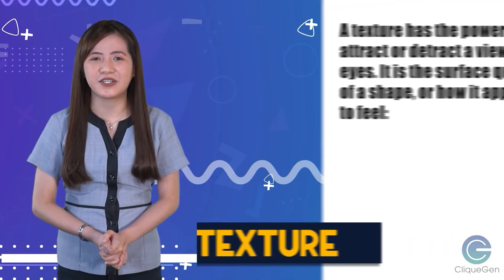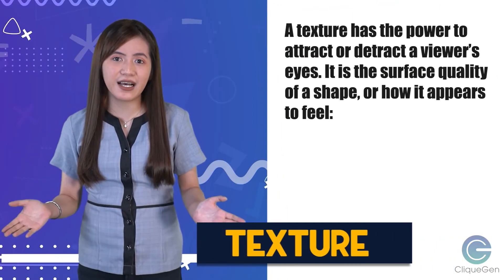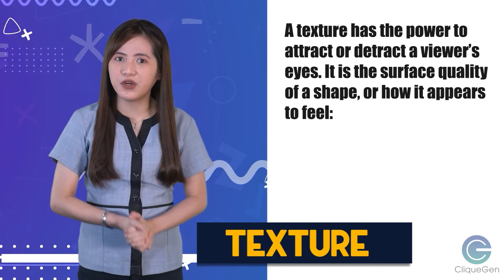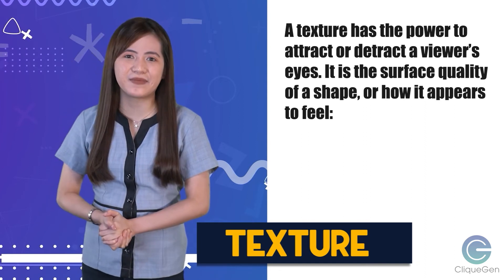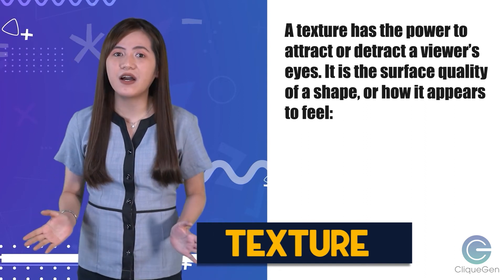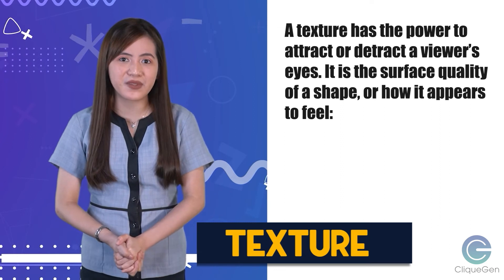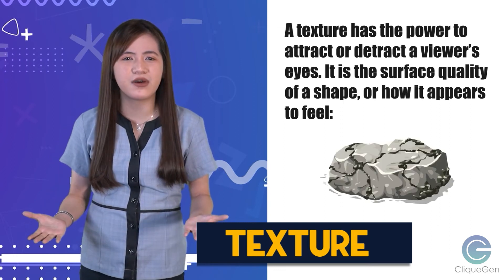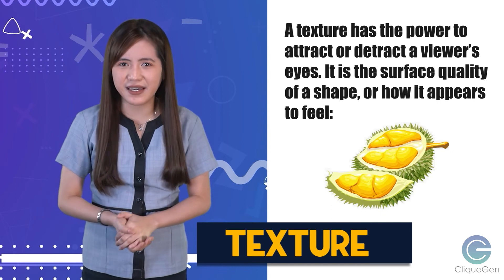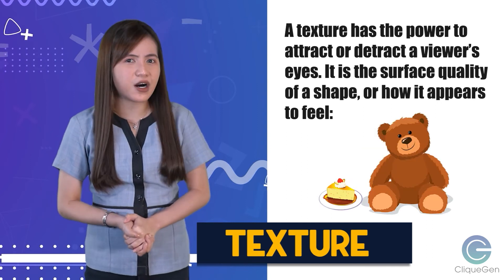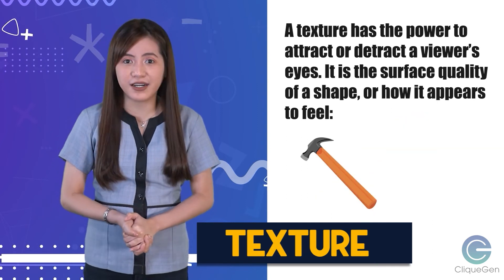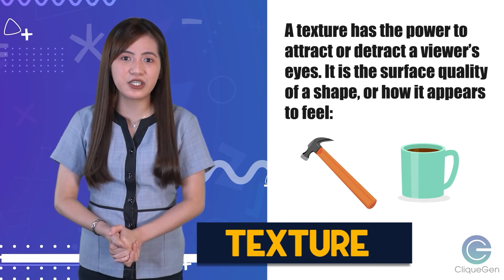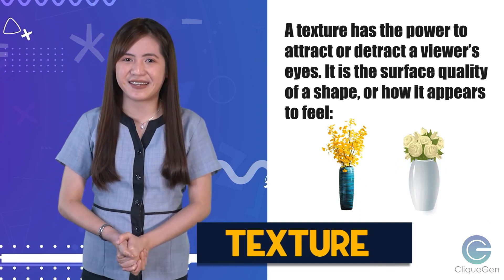Texture. A texture has the power to attract or detract a viewer's eyes. It is the surface quality of a shape, or how it appears to feel — like rough, smooth, spiky, soft, hard, and glossy. Also, a texture can be real or implied.